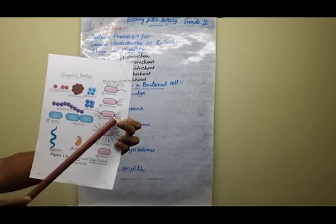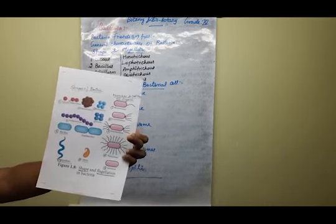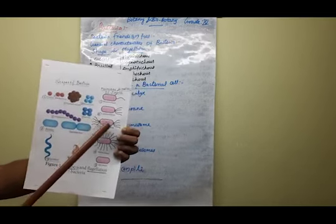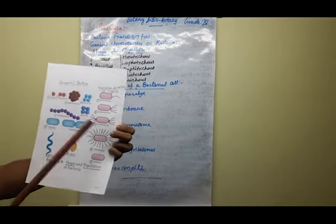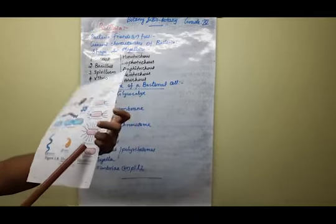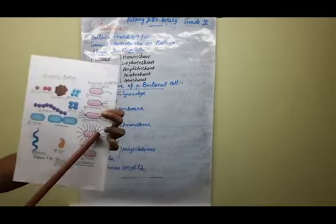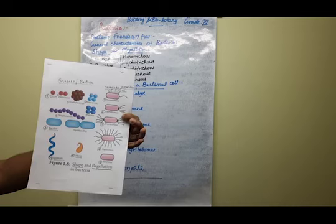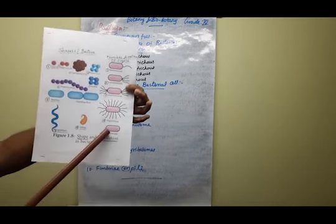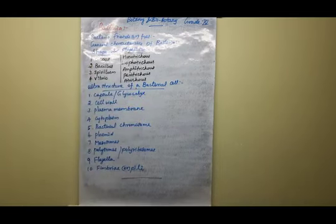Amphitrichous means a group of flagella attached on both sides of the bacterial cell. Peritrichous means flagella are present along the entire cell surface. Atrichous means without flagella — no flagellum present in the bacterial cell, and that is known as atrichous.